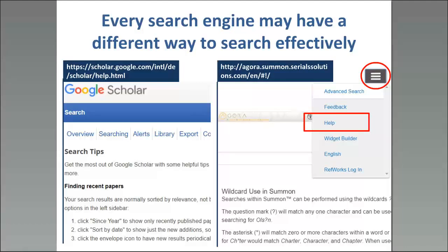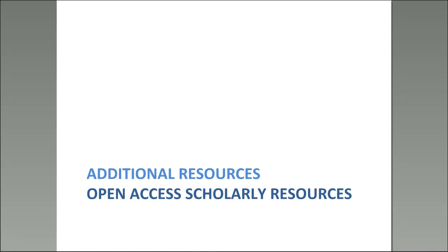Some search interfaces also allow you to save your search. Bandwidth costs and access are an issue for many of us. In Summon, for example, you can save your search and export or download the search results, or have them emailed to yourself. This means you can look at the results calmly offline, decide which ones to focus on, and then come back online to search. This is useful when Internet access is both slow and expensive.